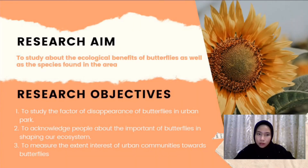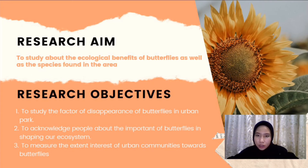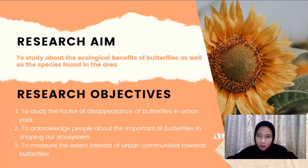For the third issue, uncontrolled use of pesticides — for example fogging — has disturbed butterfly habitats. This research aims to study the ecological benefit of butterflies as well as the species found in the area. The objectives are: to study the factors of disappearance of butterflies in urban parks, to acknowledge people about the importance of butterflies in shaping our ecosystem, and to measure the extent of interest of urban communities toward butterflies.